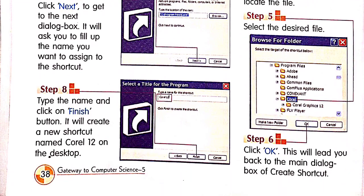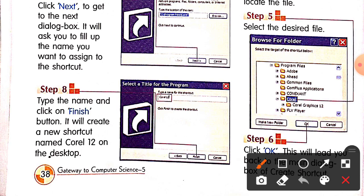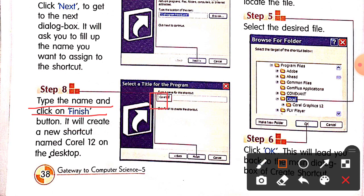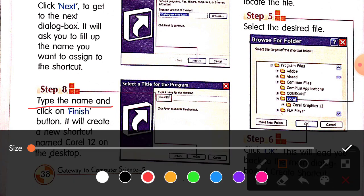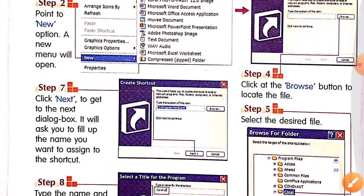Type the name you want to assign to the shortcut, then click Finish. This will create a new shortcut — for example, a shortcut named 'Coral 12' on the desktop. When you have typed the name and clicked Finish, the shortcut will appear on your desktop. That is how you create a shortcut of a program.